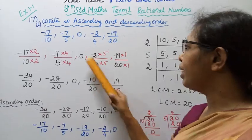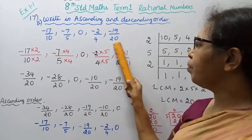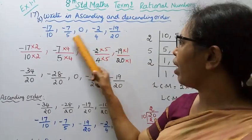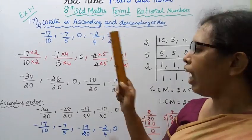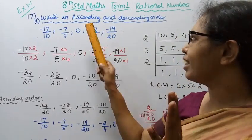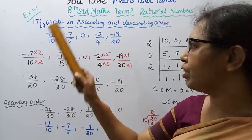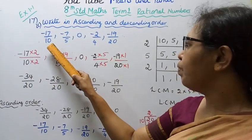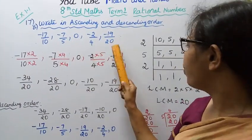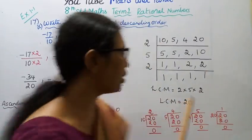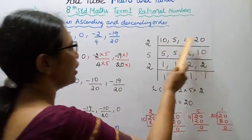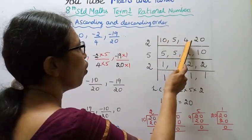The denominators are different: 10, 5, 4, 20. For ascending order, the denominators must be the same first. Then we will use LCM: 10, 5, 4, 20. This is 10, 4, 20, three even numbers.